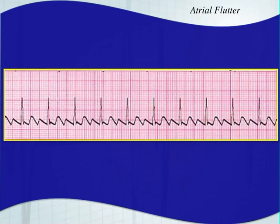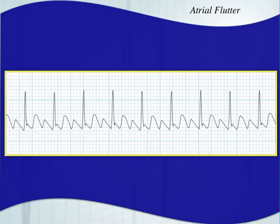Here's another example of atrial flutter that a lot of people might miss, thinking the flutter wave is a T wave and this one is a P wave. But if you continue drawing in the flutter waves, you can see this is an atrial flutter — in fact a three to one atrial flutter, which typically occurs around 100 beats per minute. These F waves become hidden, which makes them so hard to identify. Sometimes you have to look at them upside down — if you flip the rhythm you can see the sawtooth pattern a little bit easier.